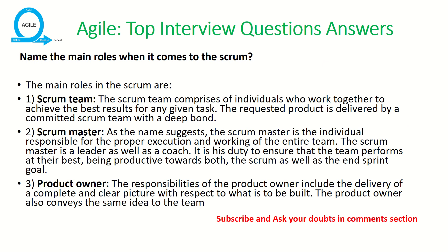The next question is: what are the main roles involved in scrum? The scrum team is made up of developers, designers, and QA. There is a scrum master who acts as a coach, engaging and managing the entire team. The product owner owns the entire product and ensures it is delivered exactly as envisioned and agreed upon.